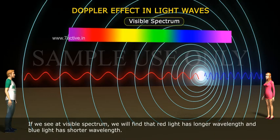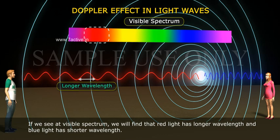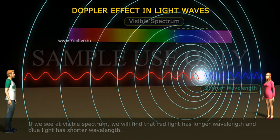If we look at the visible spectrum, we will find that red light has longer wavelength and blue light has shorter wavelength.